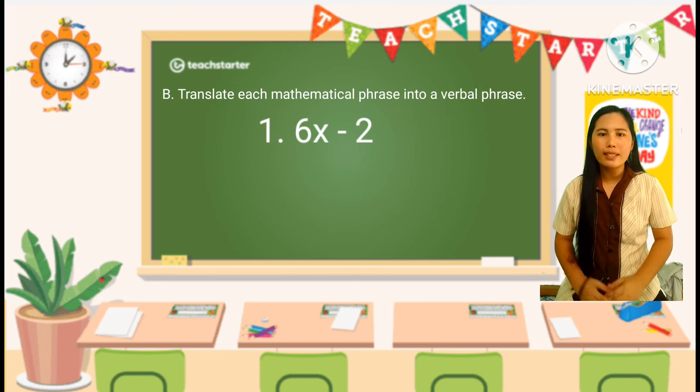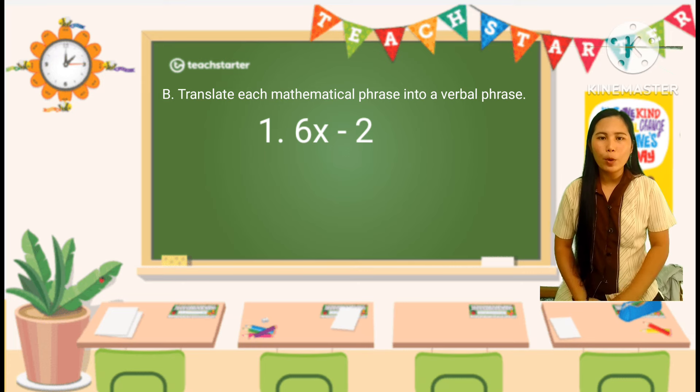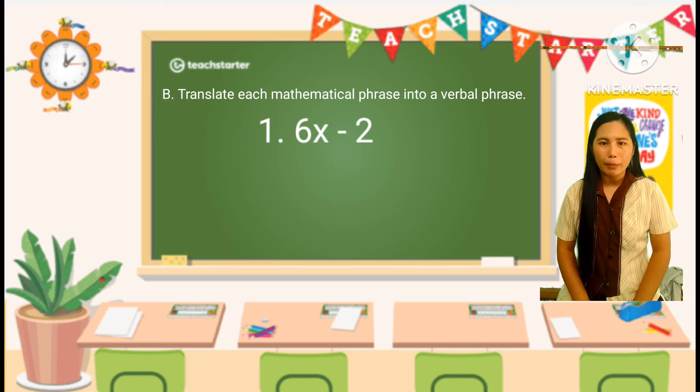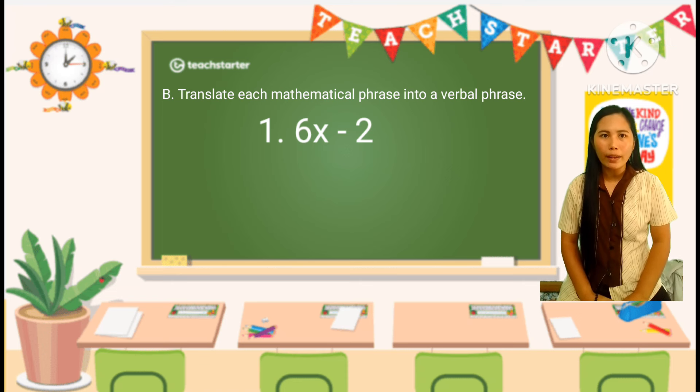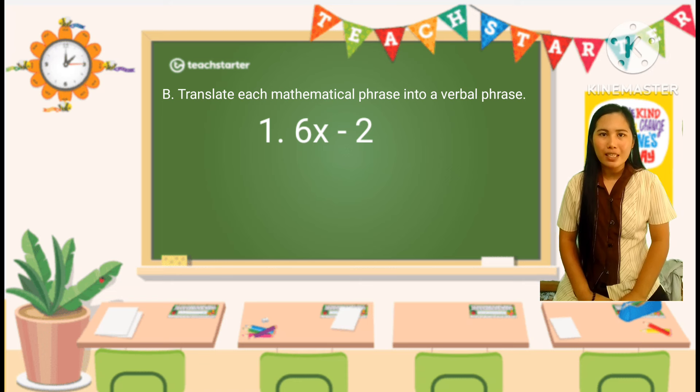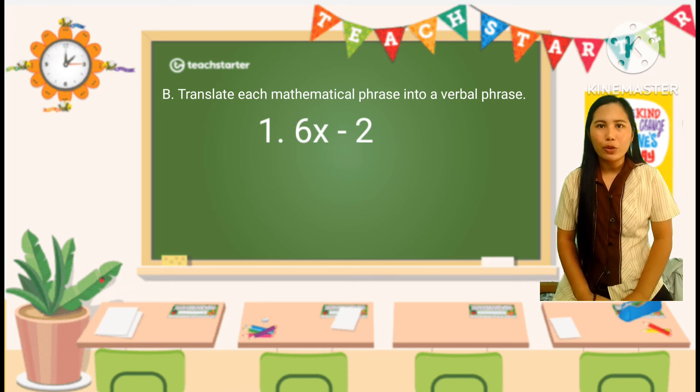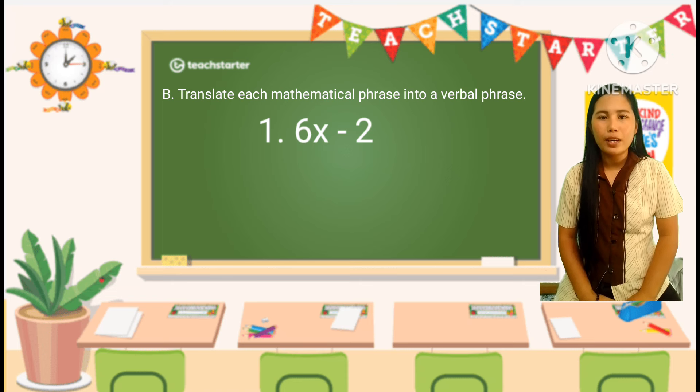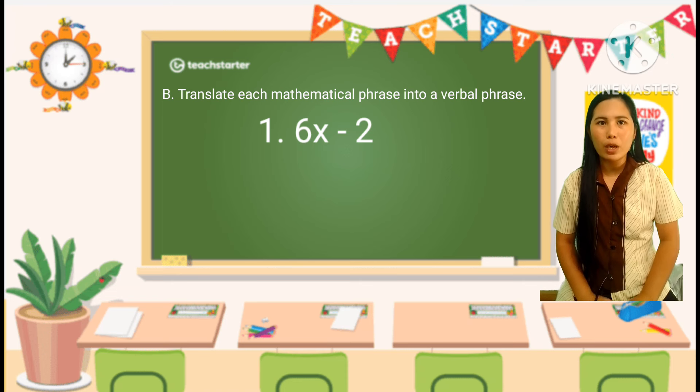Now, let's have an example on how to translate mathematical phrase to verbal phrase. Here is example number 1. Translate the mathematical expression 6x minus 2 into a verbal phrase. You can use the following steps. First, identify the parts of expression.